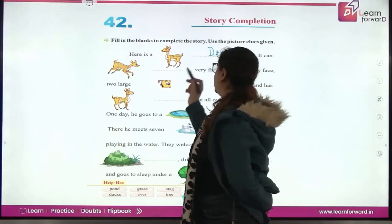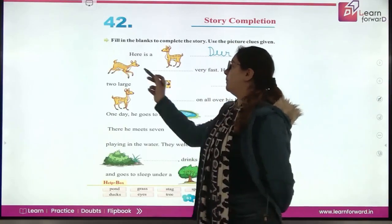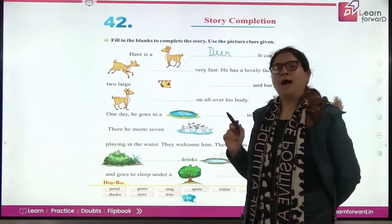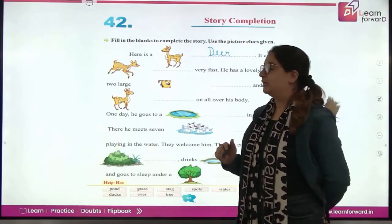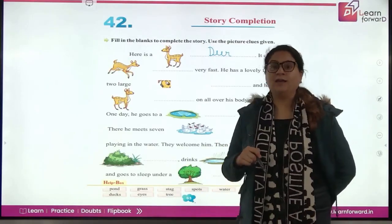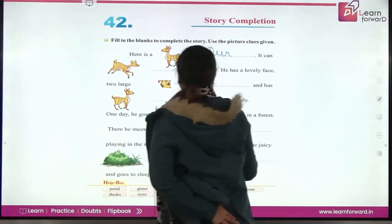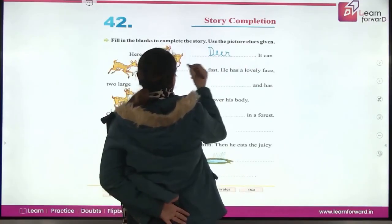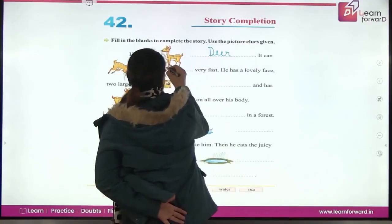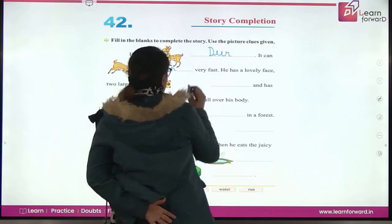It can dash very fast. So, what is it doing here? Running. Very good. What do we call running in English? Run. So we'll write 'It can run', R-U-N, run, very fast.